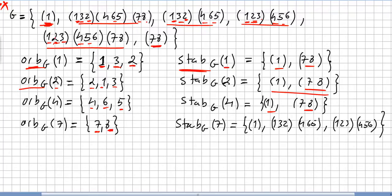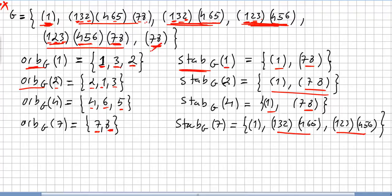What about the stabilizer of 7 in g? The permutations where 7 goes to 7 are the stabilizers. The permutation (1)(2 3)(4 5 6) keeps 7 fixed, as does (1 2 3)(4 6 5) — those where 7 maps to 7. Permutations involving the (7 8) cycle send 7 to 8 and are not stabilizers. So the stabilizer of 7 in g consists of those permutations that fix 7.